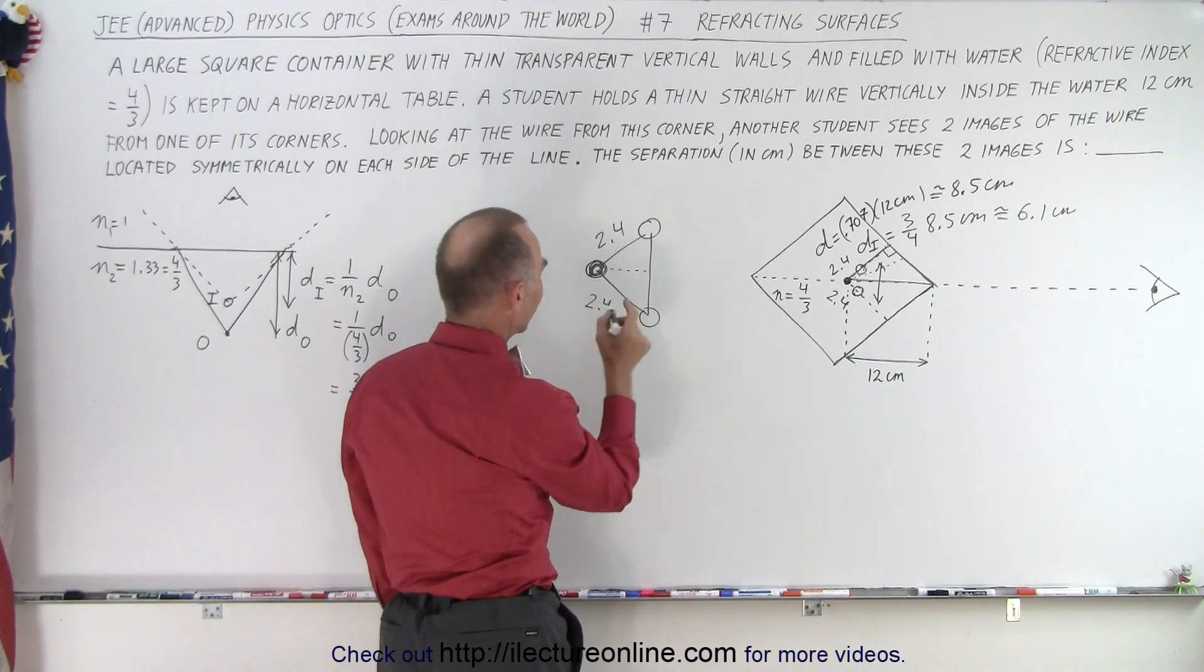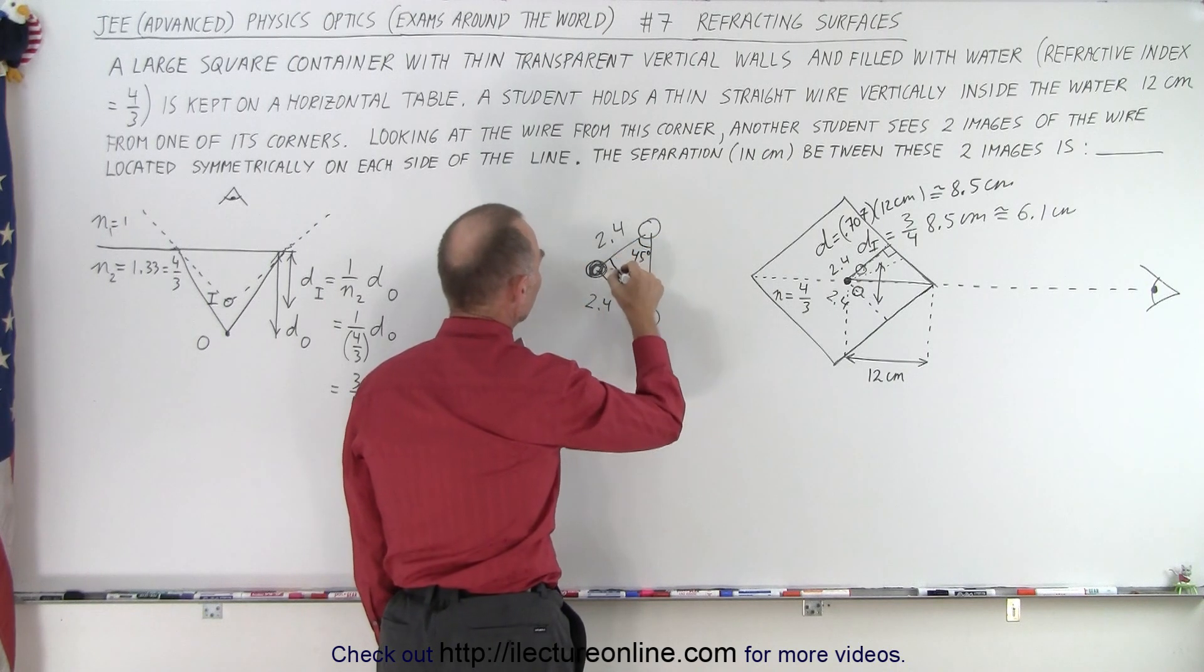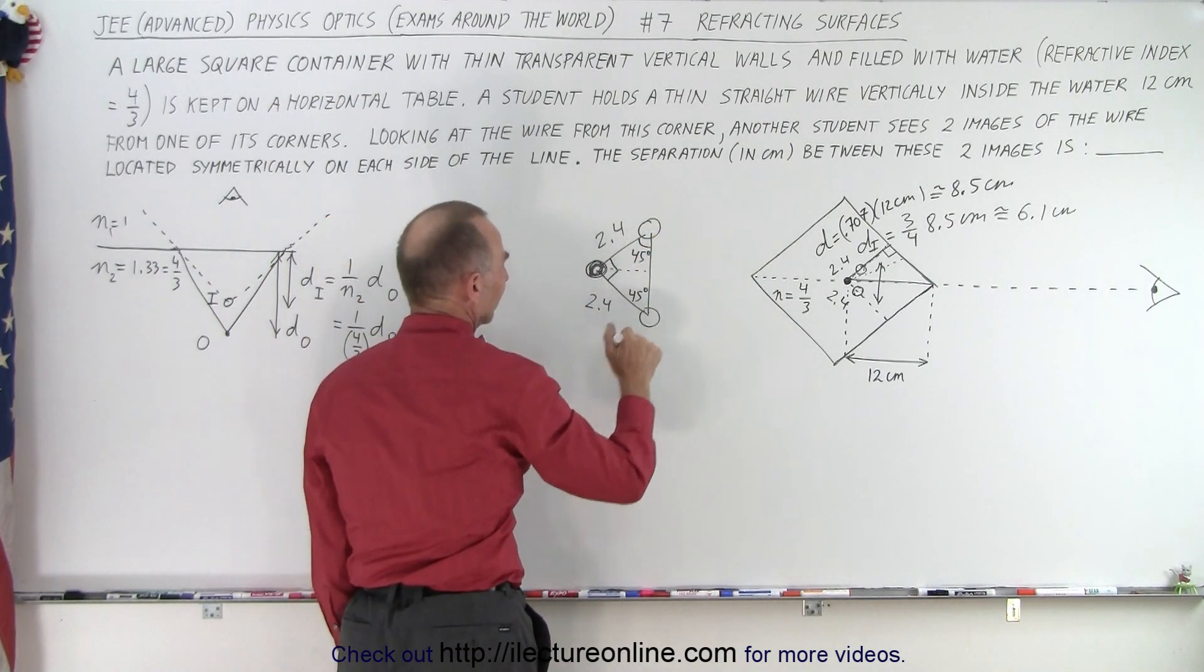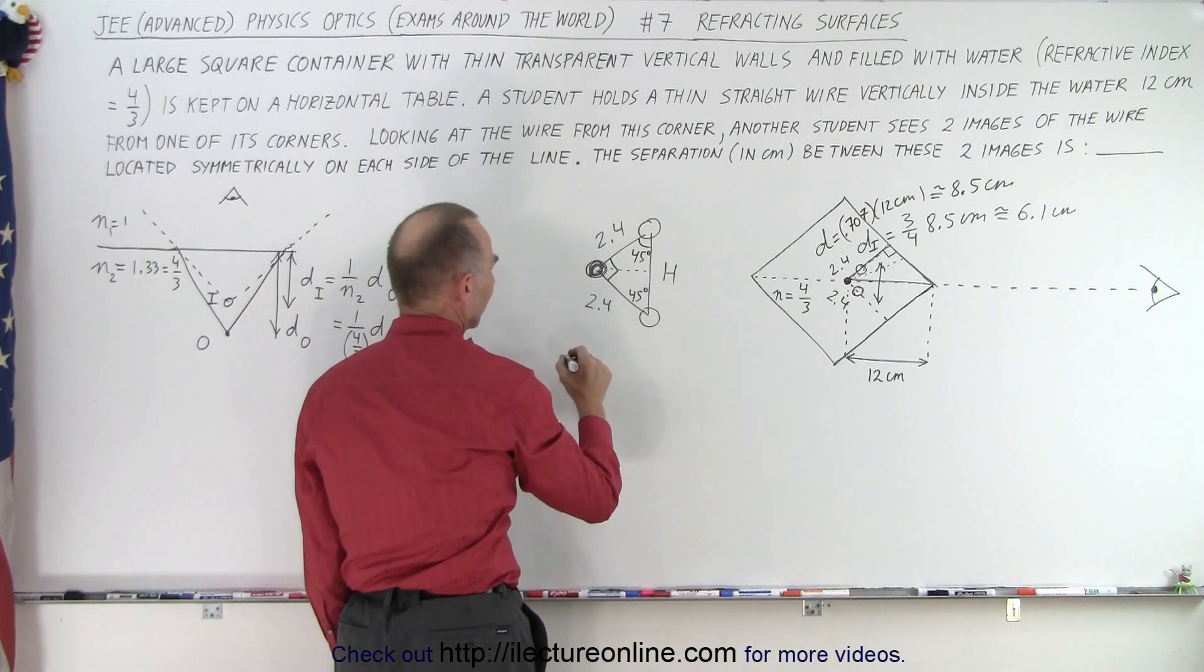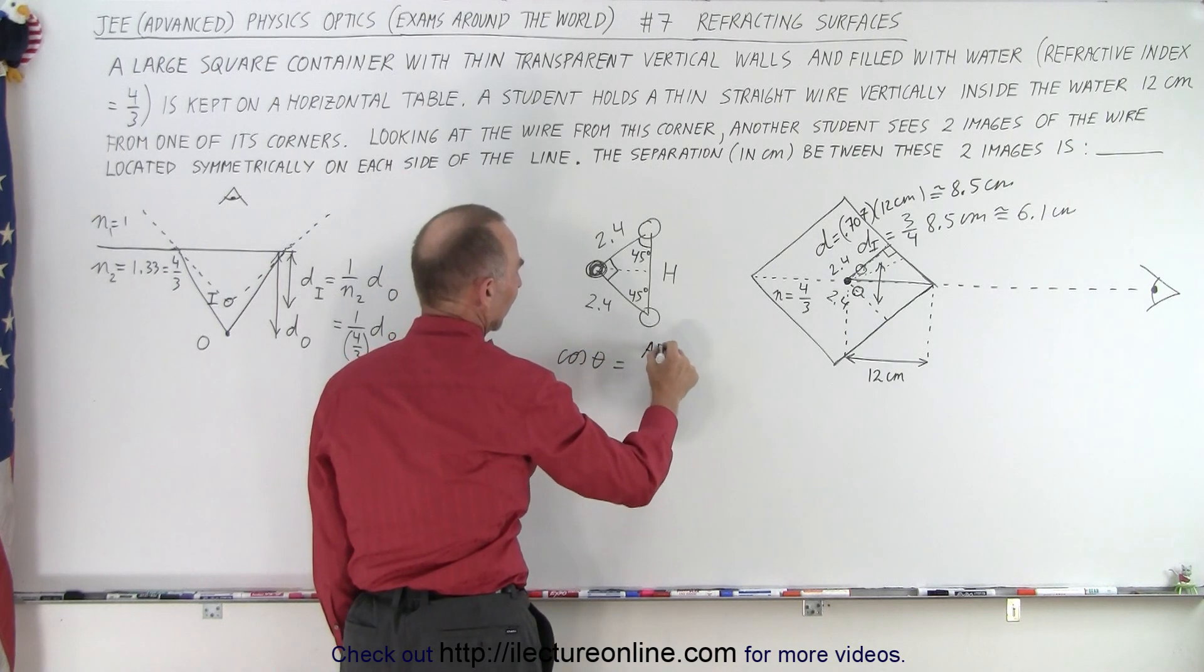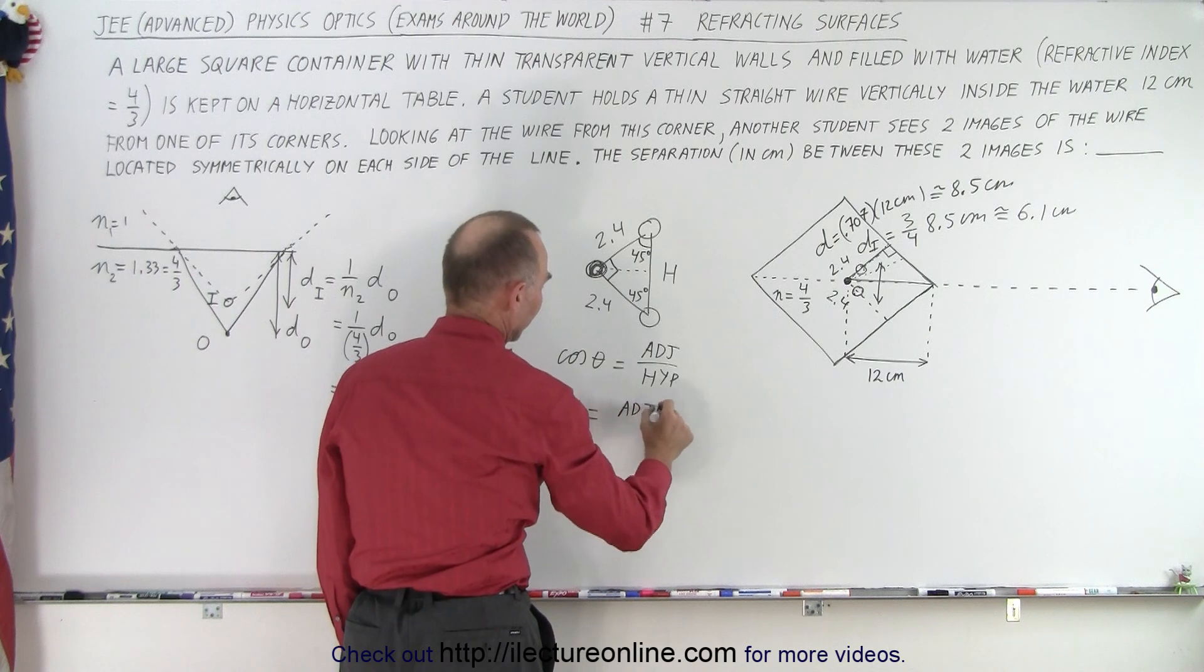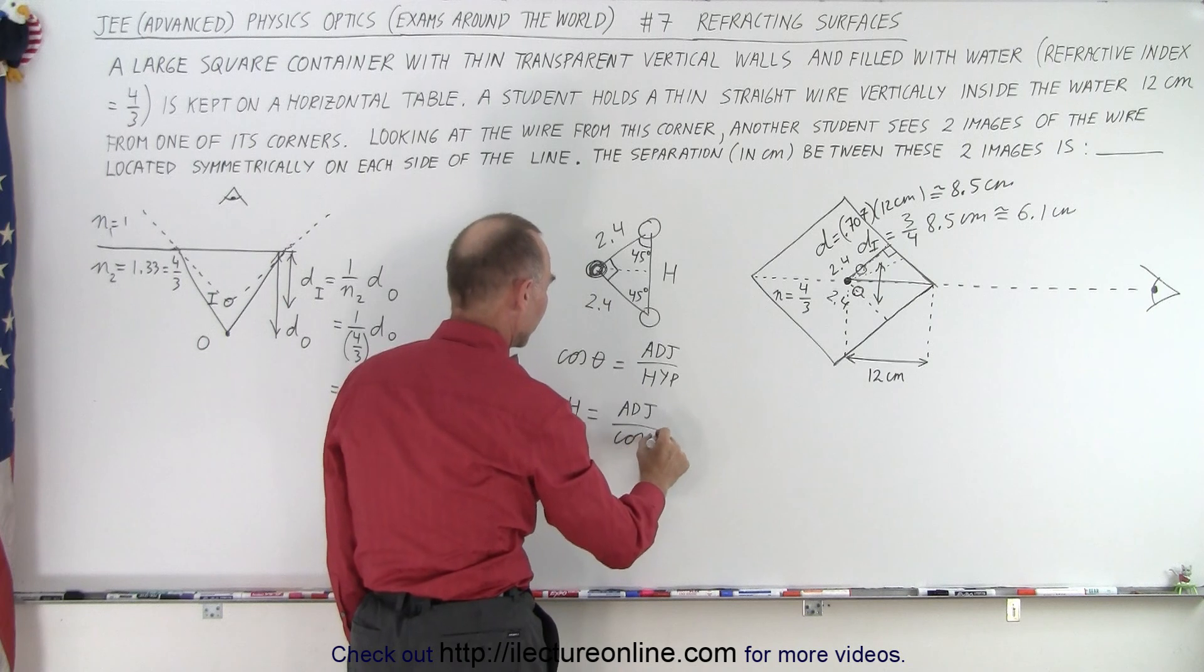Again, we have symmetry. We have a 45 degree angle here, we have a 90 degree angle here, we have a 45 degree angle over here. So now we need to find this hypotenuse. We can say that the cosine of theta is equal to the ratio of the adjacent side divided by the hypotenuse, or we can say that the hypotenuse is equal to the adjacent side divided by the cosine of 45 degrees.